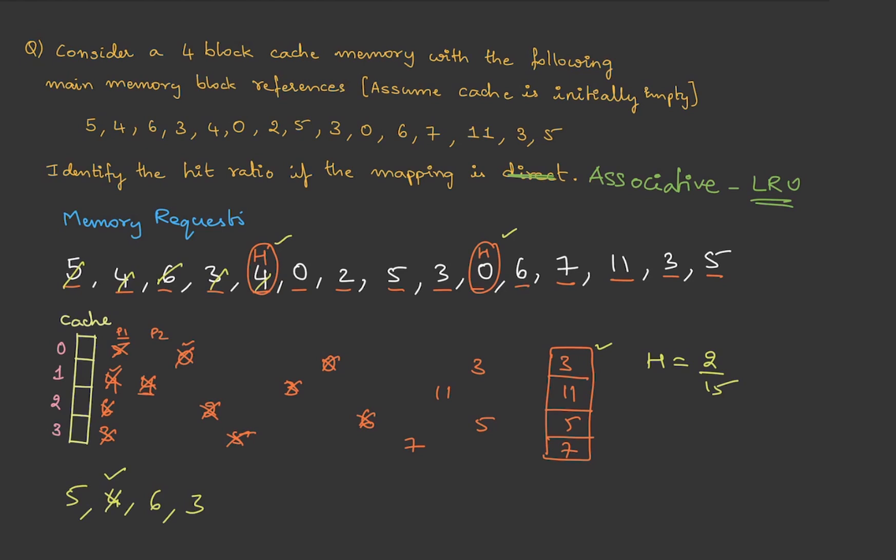Then we have 4, which is a hit, so put a tick mark and move it to the right. Then 0, which will be placed here. The least recently used—check which is not crossed out—is 5, so we remove it. Then we have 2, then 5, then 3, then 0 again. Put a tick mark, cancel it, and move it to the right to show it has been accessed.